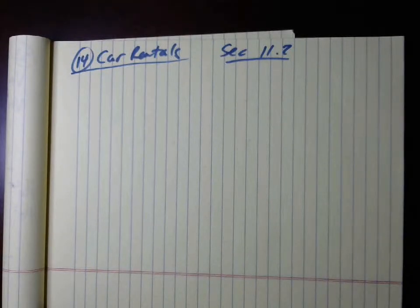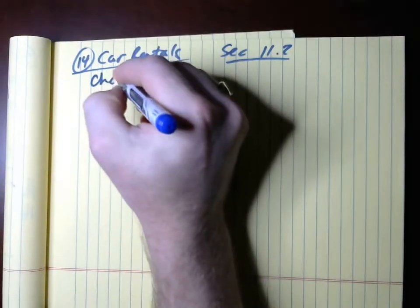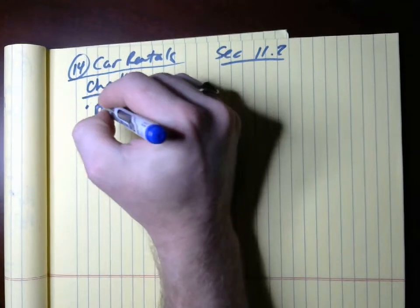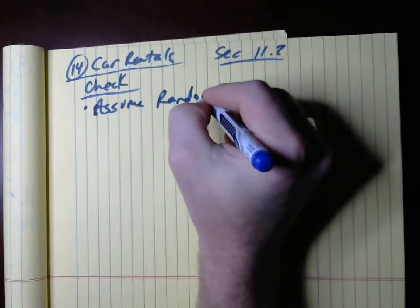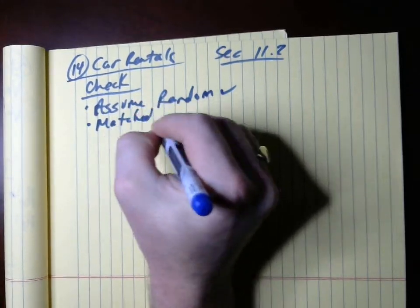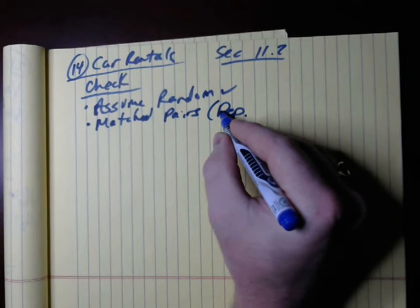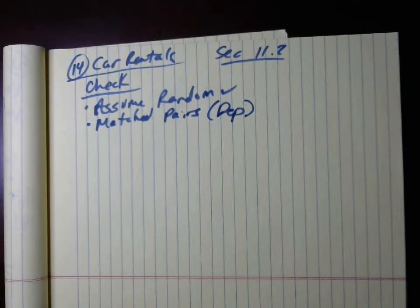We want to test whether Thrifty is less expensive than Hertz at the alpha equals 0.1 level of significance. Let's go ahead and look at the checks. We can assume the sample is obtained through a randomized experiment — assume random. Step two: the sample data are matched pairs, and they're dependent. The idea of matched pairs is we have a pair representing each of the cities — Thrifty and Hertz from Chicago is one pair, Thrifty and Hertz from Los Angeles is another pair.